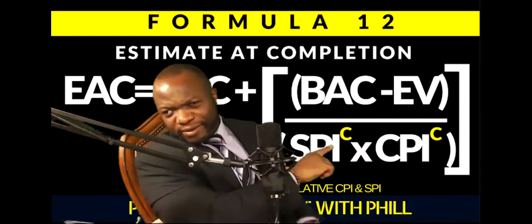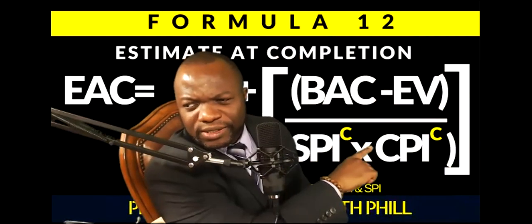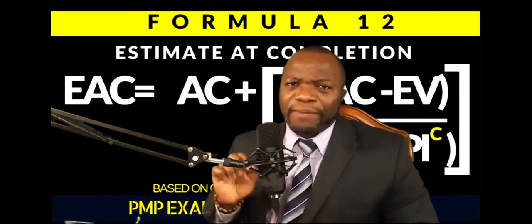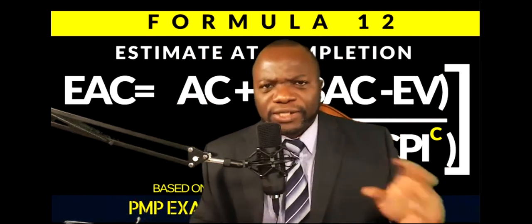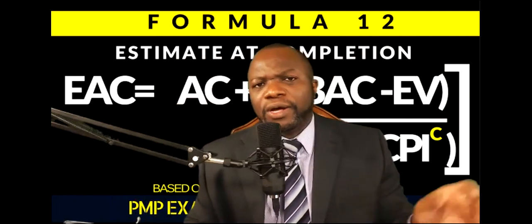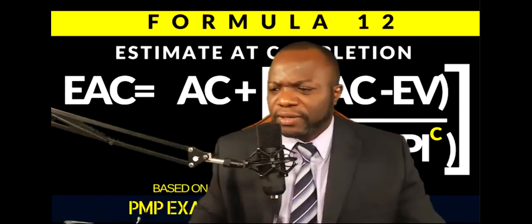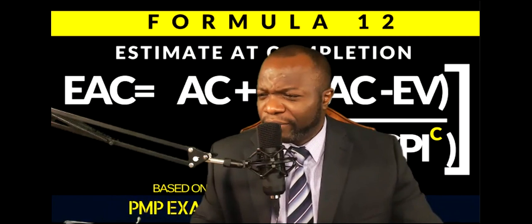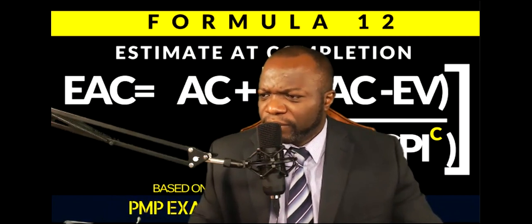like if you take a look right here, that C, that C you're seeing, those two Cs in yellow, those two Cs are cumulative. They mean cumulative. Why am I stressing cumulative? Because inception to date is what you use this formula with. Not current, but cumulative. You need to watch those earned value mania videos. They'll probably help you. I would suggest that. I would.